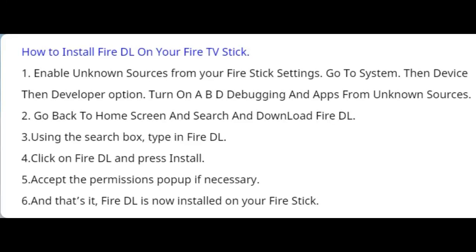How to install FireDL on your Fire TV Stick. Step 1: Enable unknown sources from your Fire Stick settings. Go to System, then Device, then Developer Options. Turn on ADB debugging and apps from unknown sources.